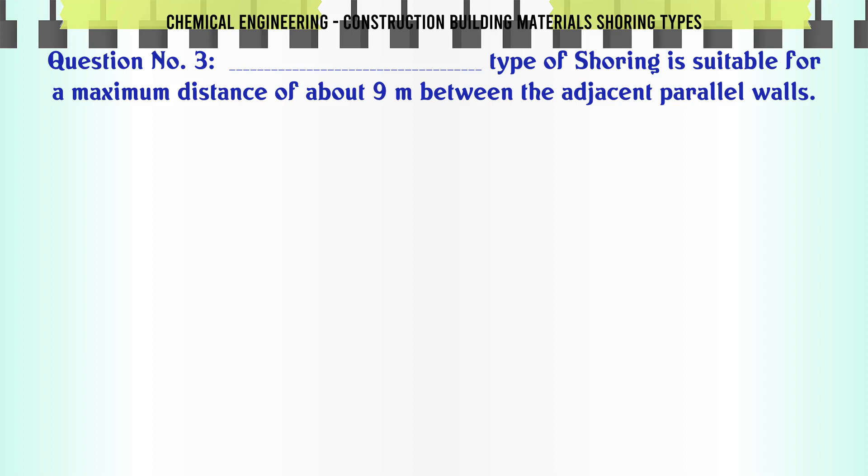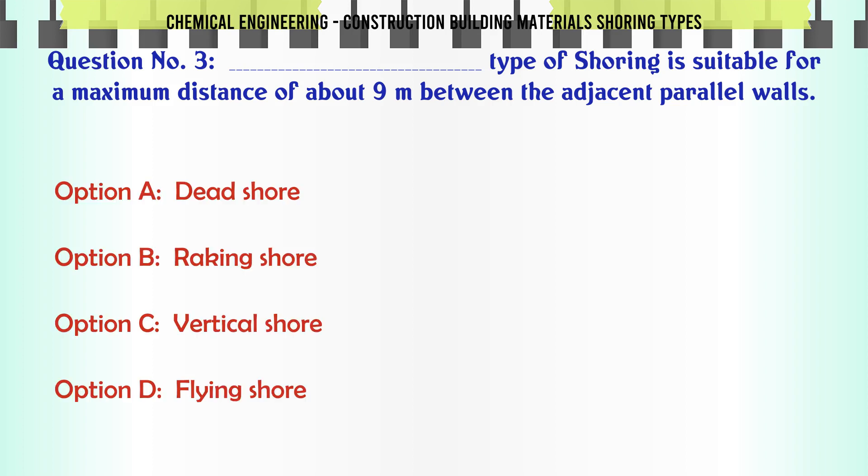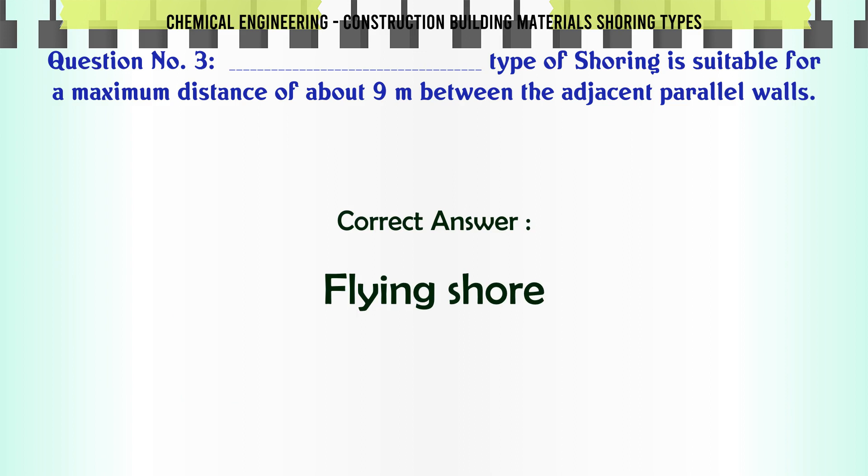Question 3: Blank type of shoring is suitable for a maximum distance of about 9 meters between the adjacent parallel walls. Options: A. Dead shore, B. Raking shore, C. Vertical shore, D. Flying shore. The correct answer is Flying shore.